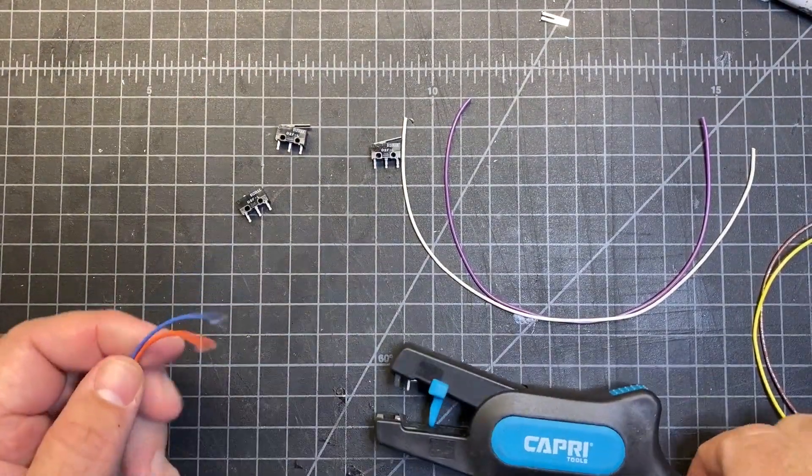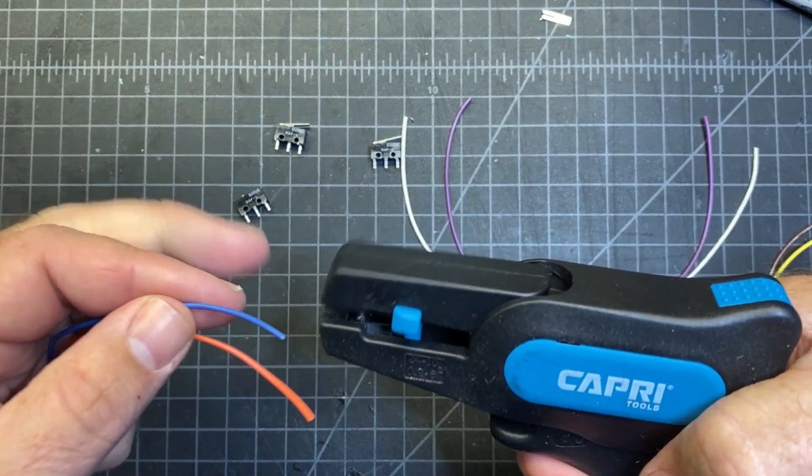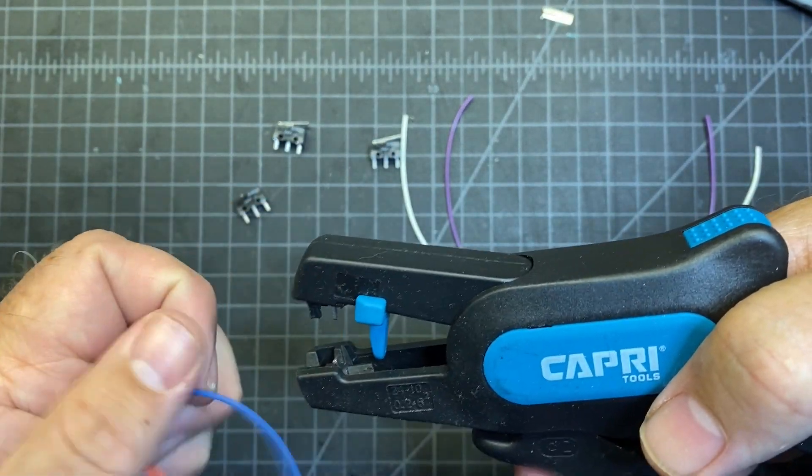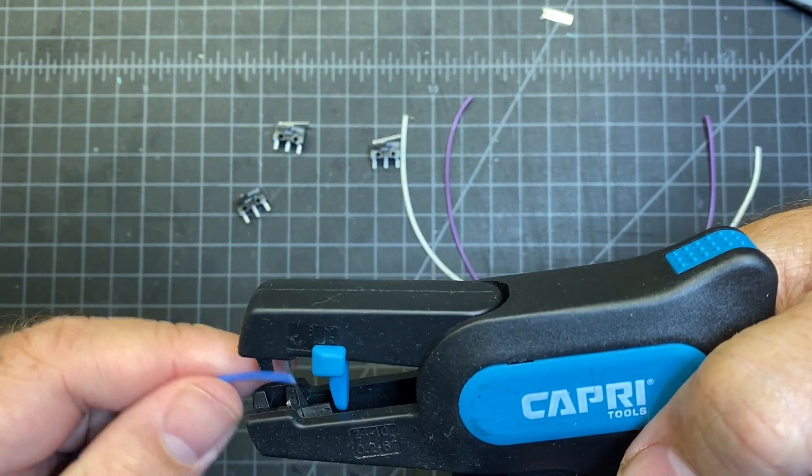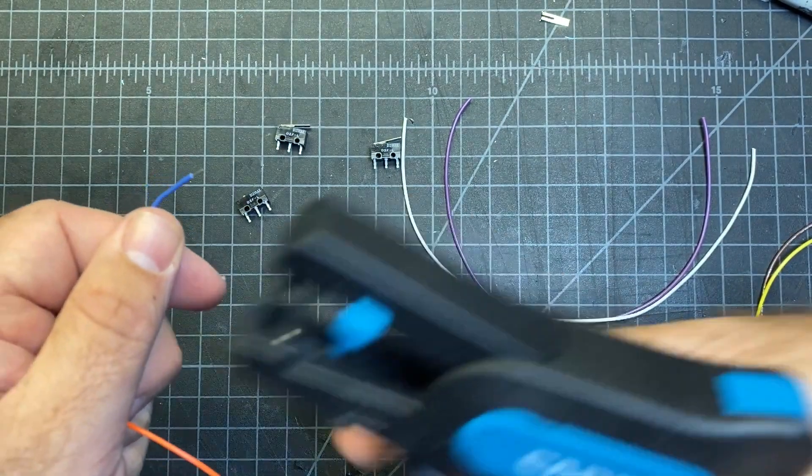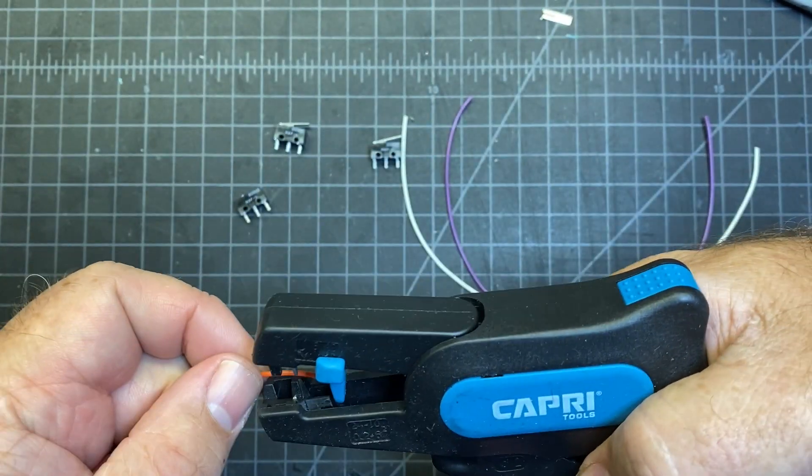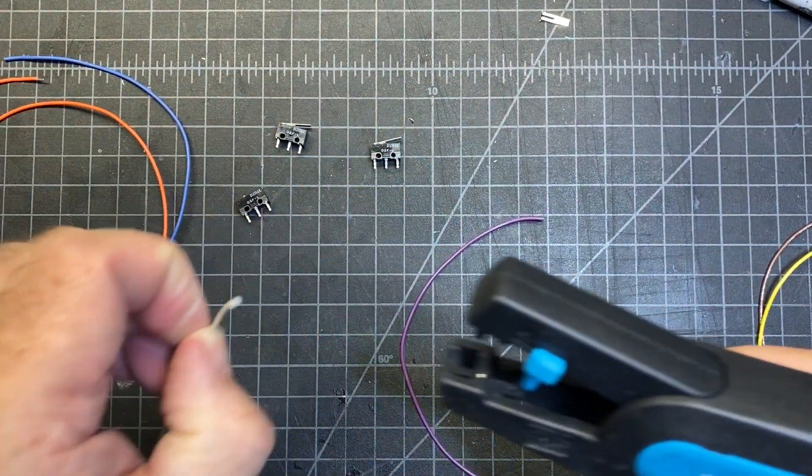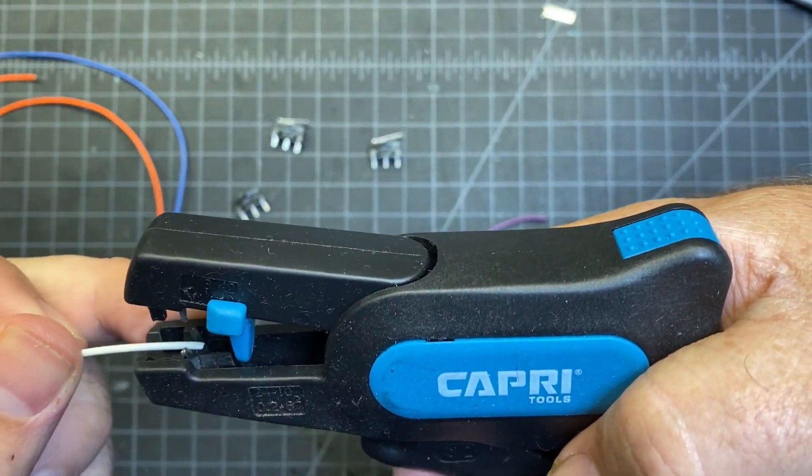Next thing I'm going to do is just strip a little bit of wire off the ends so that way I can solder them to the end stops. You don't really need to remove much. Probably about that much would be plenty or even less. I'll go ahead and do that for each wire.